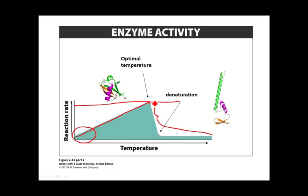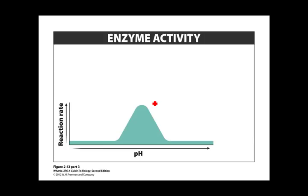Let's look at the same thing for pH. This graph shows reaction rate on the y-axis and pH on the x-axis, going from low pH (acidic, around 1) to high pH (basic, around 14), with pH 7 in the middle. pH is the measure of the amount of free hydrogen ions. At a low, acidic pH there are more hydrogen ions; at a higher, basic pH there are fewer; at pH 7 the hydrogen ions and OH ions are equal.